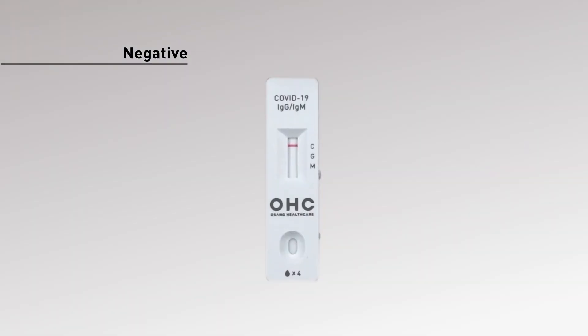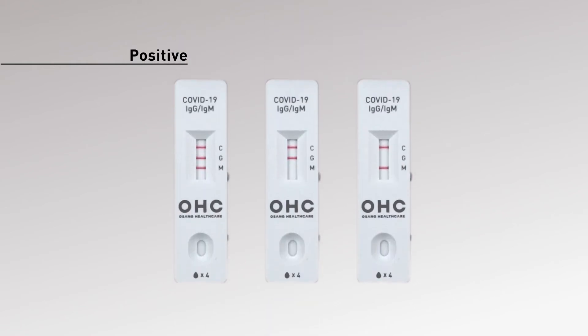The colored lines appear in the control line region, and no line appears in the test line regions M or G — the result is considered negative. The colored lines appear in the control line region C and any of the test line regions M or G — the result is considered positive.